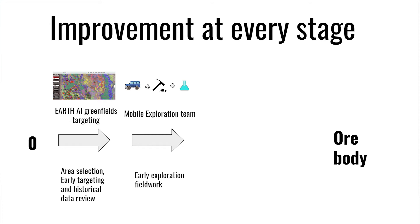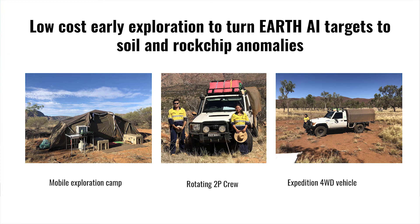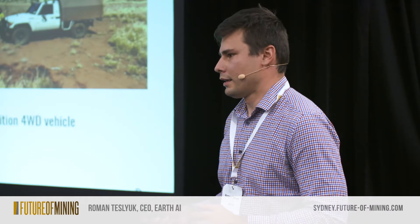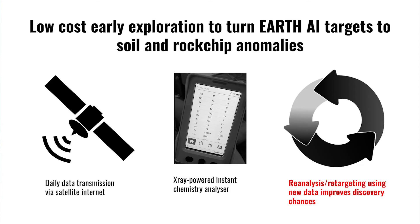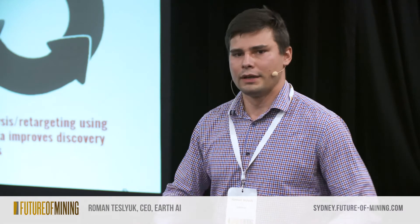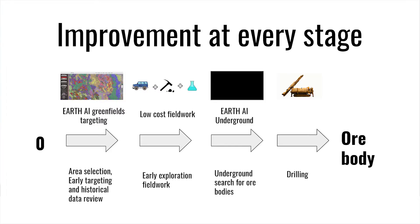Once you have the predictions you have to go and check them. Fire bullets first, then cannonballs — don't waste money on early-stage targets. Our approach is a very mobile two-person crew with a permanently set-up camp with full facilities. They drive and check our targets anywhere, using a portable XRF for instant data and satellite internet to transfer data to the office daily. We run analysis each time to improve prediction quality so the system learns and improves over time.